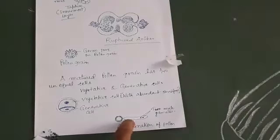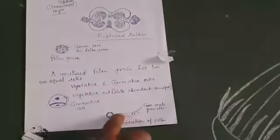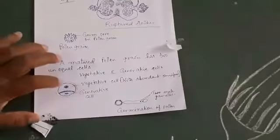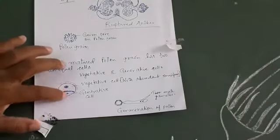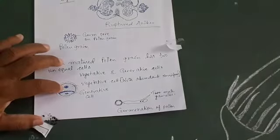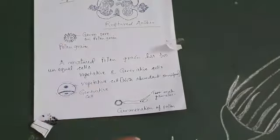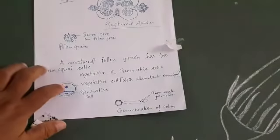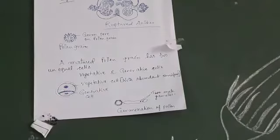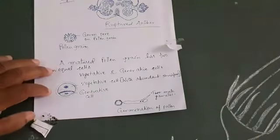Here you can see the germinating pollen grain with its pollen tube. The pollen grain has two unequal cells. The larger one is called the vegetative cell, which has abundant stored food material and is meant for the formation of the pollen tube.